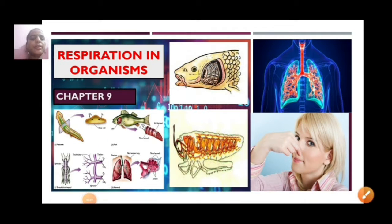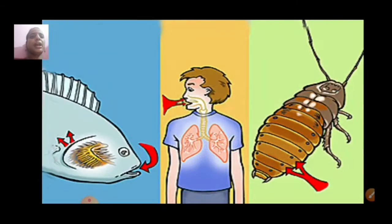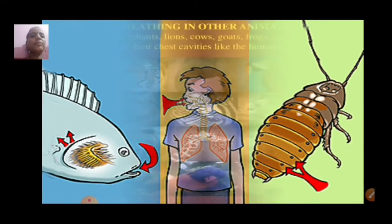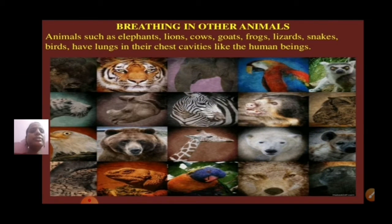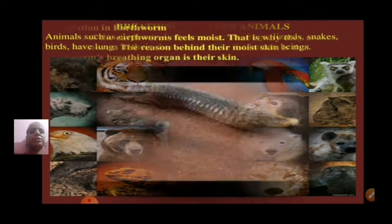Hello students, we are again back with another video for chapter 9, Respiration in Organisms. In this video, we will be talking of respiration in different organisms. Animals such as elephants, lions, cows, goats, frogs, lizards, snakes, and birds have lungs in their chest cavities like human beings.